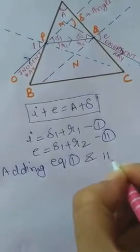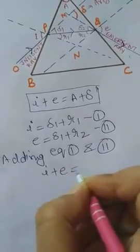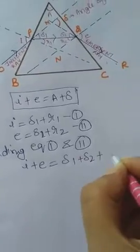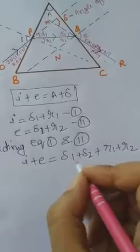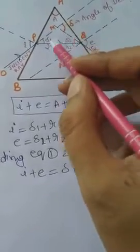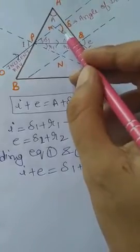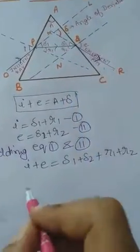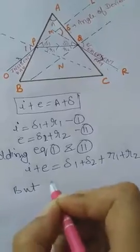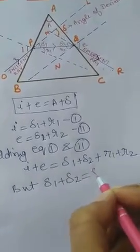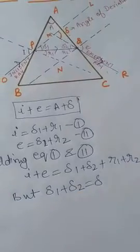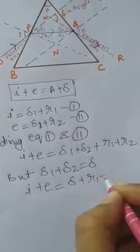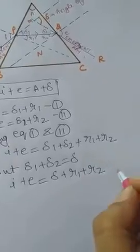Adding equations 1 and 2: i plus e equals delta one plus delta two plus r1 plus r2. Now delta one plus delta two equals delta, because the exterior angle equals the sum of the interior angles. So we can replace delta one plus delta two with delta, giving us equation 3: i plus e equals delta plus r1 plus r2.